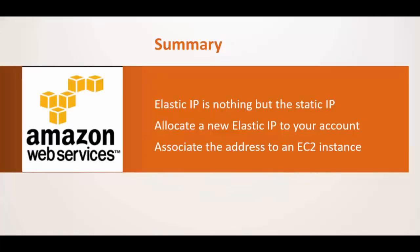Let's have a quick summary. The first thing we've seen is that the Elastic IP is nothing but a static IP. Secondly, we've seen the steps on how we can use the AWS console to allocate a new Elastic IP to our account. Lastly, we've seen that once we have the Elastic IP we can associate that address to an EC2 instance.